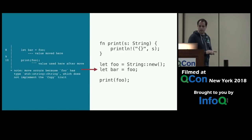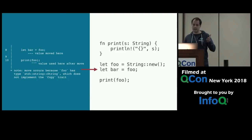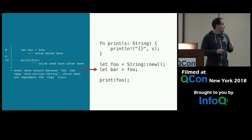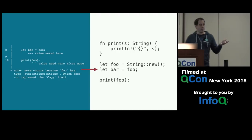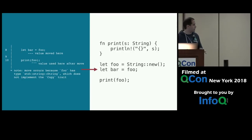If you violate the requirements of Rust — say you create a string, assign it to foo, then assign foo to bar, but then try to pass foo into a function — foo already gave up ownership and can't use that string anymore. The compiler is going to complain with a pretty helpful error message. That's the first building block of Rust and ownership.